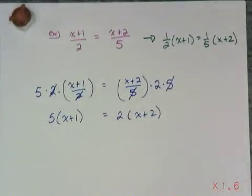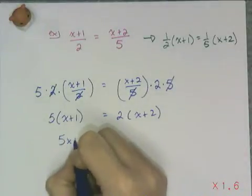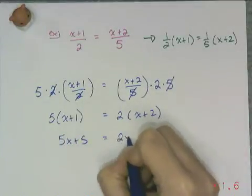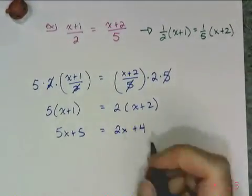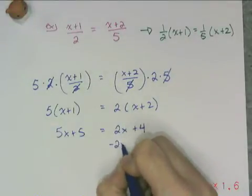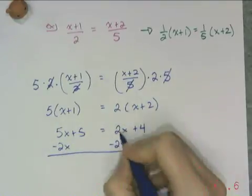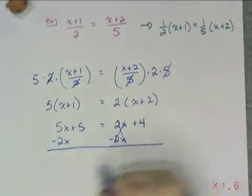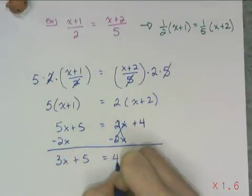And so then this is just a basic distribution problem. 5x + 5 equals 2x + 4. I have my unknown on both sides. And to get rid of the x from one side, the only properties I'm allowed to use are the addition or subtraction properties. So in this case, I'm going to strategically subtract 2x from both sides. And then I am left with 3x on this side plus a 5 equals 4.